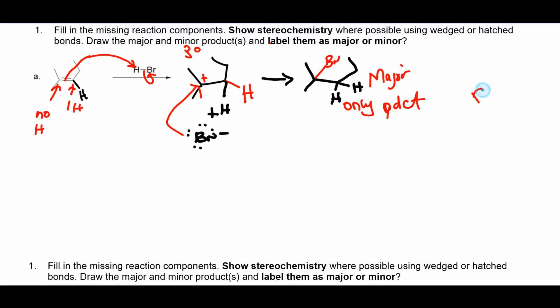To show stereochemistry you should have four different groups around the carbon: R1 ≠ R2, R2 ≠ R3, and R3 ≠ R4, where the R's are the substituents around the carbon.